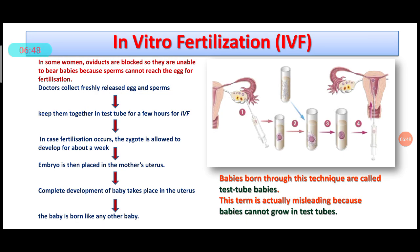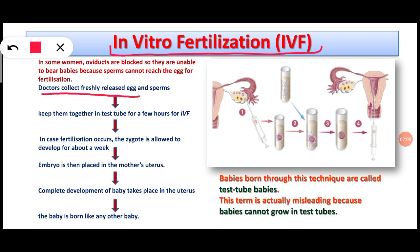The solution to this problem is in vitro fertilization — fertilization performed artificially in a test tube inside the laboratory. The doctor collects a freshly released egg from the mother and sperms from the father. Here you can see that the egg is being collected from the female.